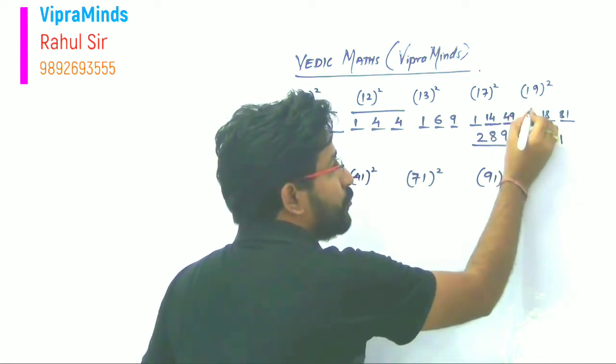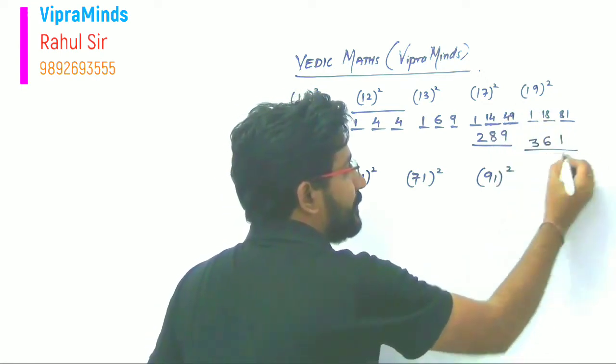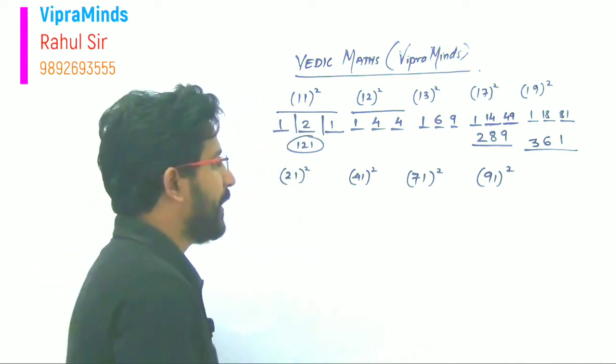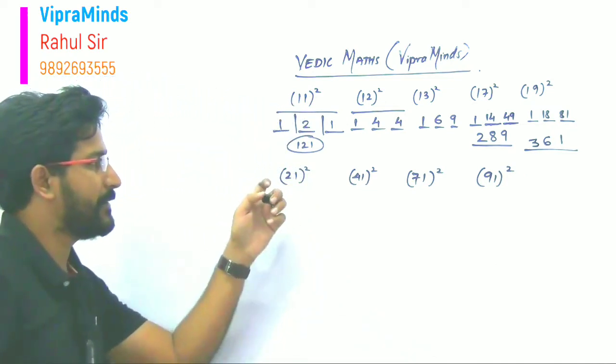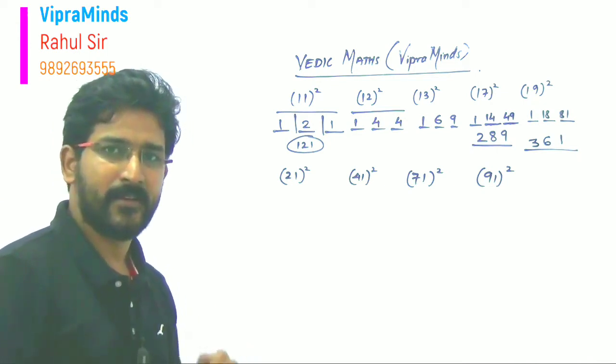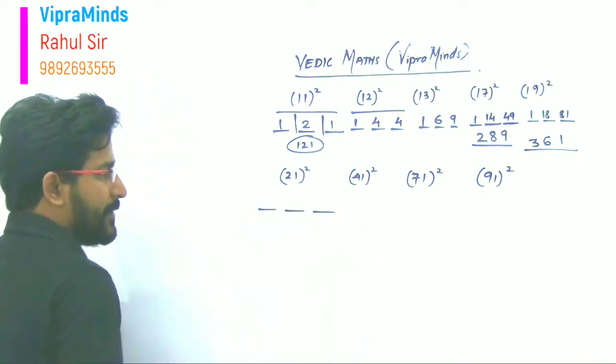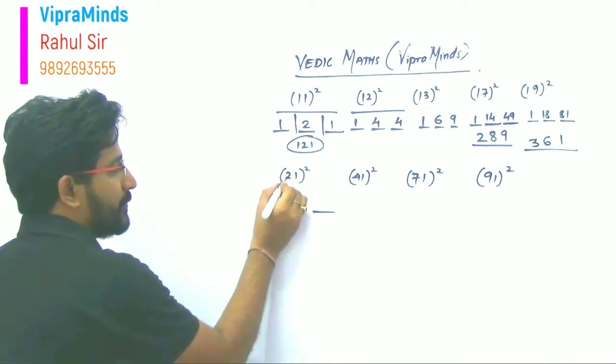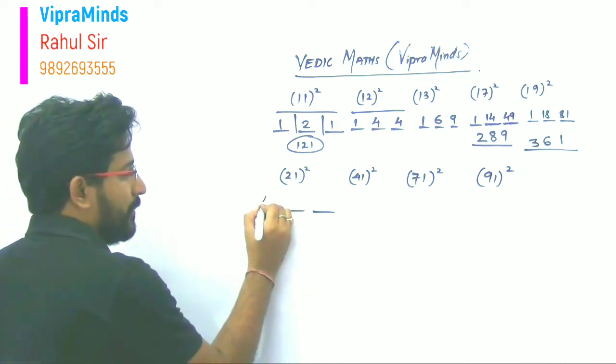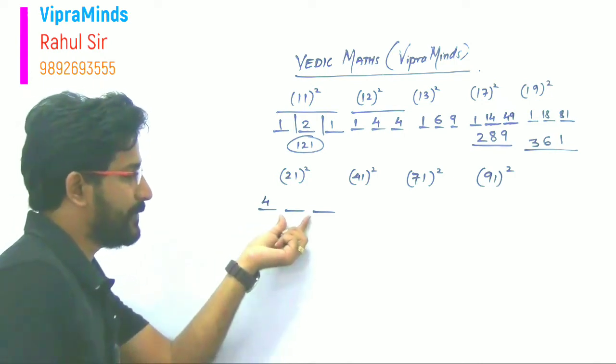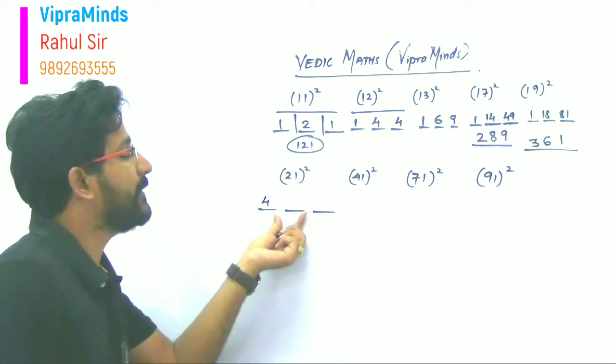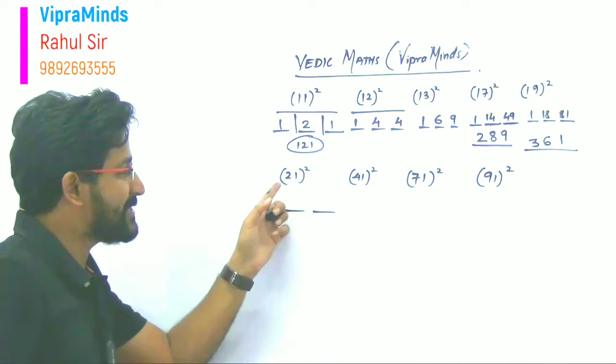So two plus one, that is three. So it will be 361. Now we'll take the example of numbers which end with one. Again we'll make three blocks. So here what will we do? Two ka square is four. Then here we will take double, but here we will take tens place ka, not unit place ka.